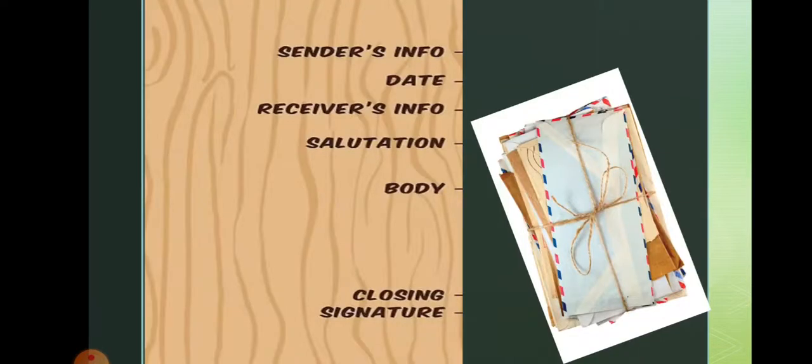Next, let's see the format of the formal letter. The first component is the sender's information, that is the sender's address. The second is the date. The third is the receiver's information — receiver's address and designation. The fourth is the salutation.